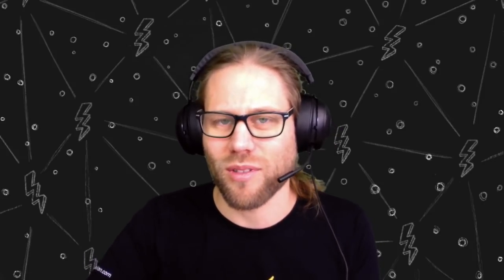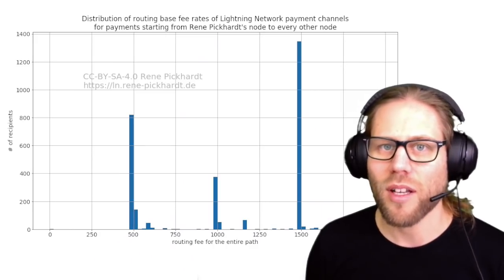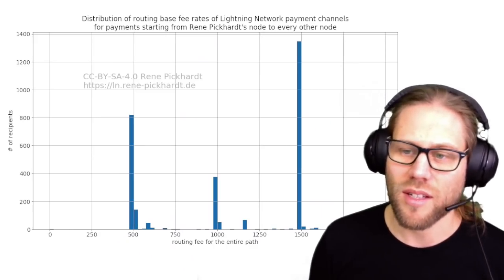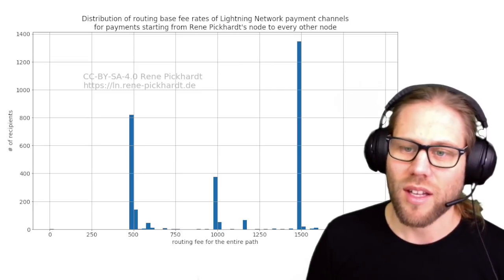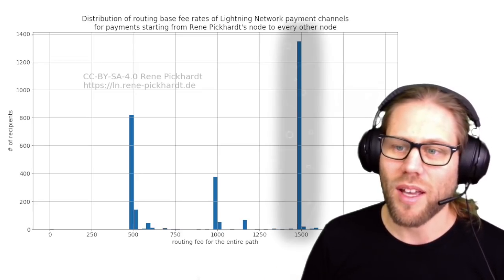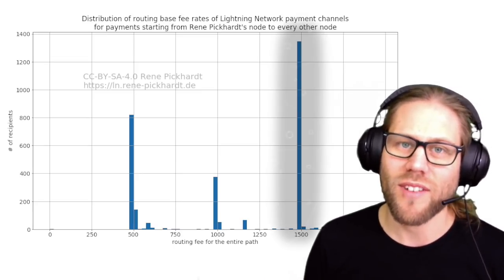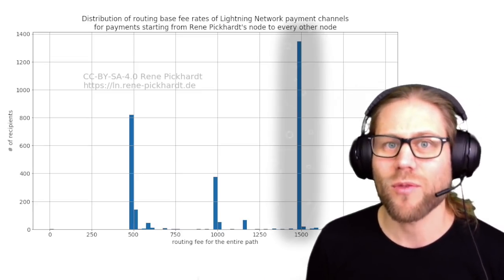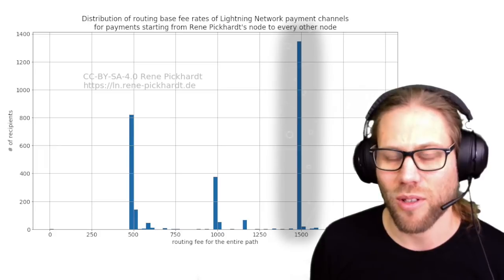I started the study by looking at the fees that I would pay to route to any other node. You can see the results in this diagram, and what you can see is that most of the time I pay 1,500 satoshis for the entire route.